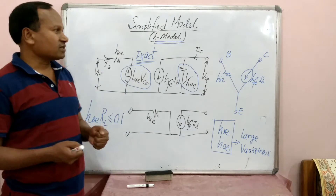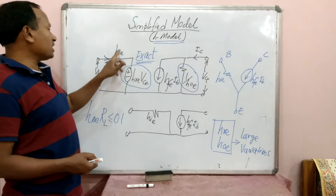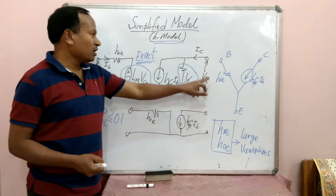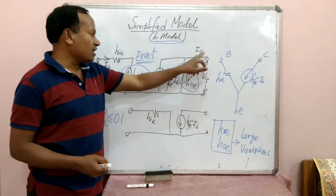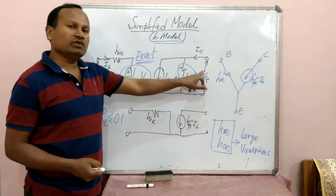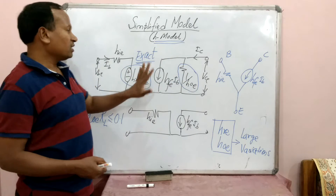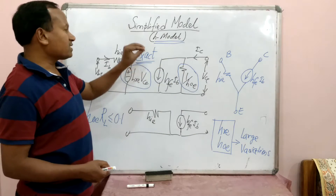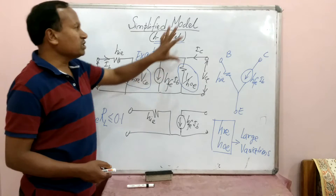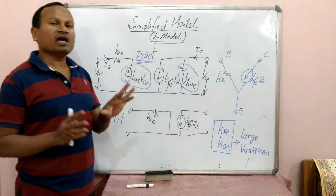There are two standard equations. The first: VBE = HIE·IB + HRE·VCE. The output equation: IC = HFE·IB + HOE·VCE. This is called the exact model because it is drawn on the basis of the two standard equations which describe the common emitter amplifier.